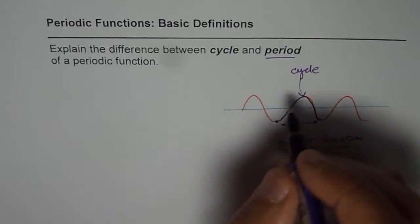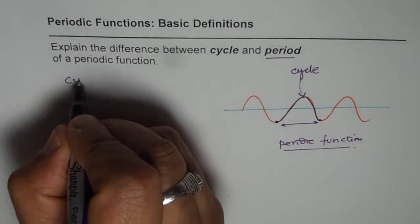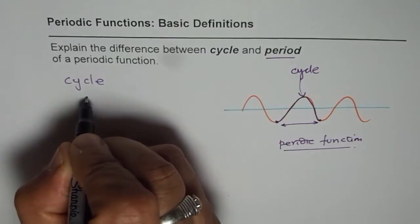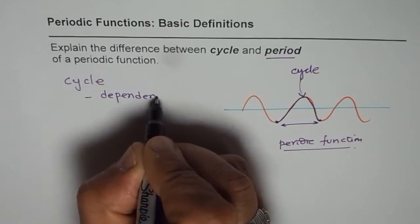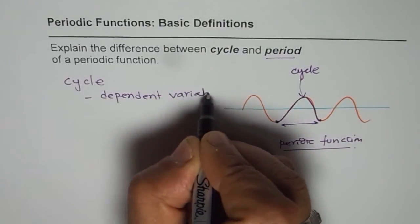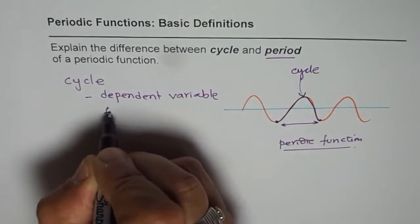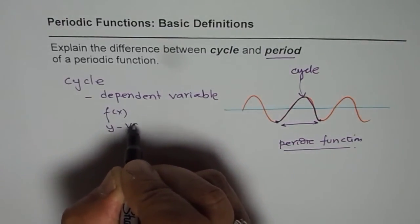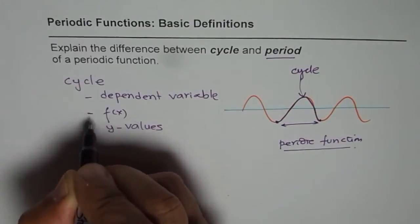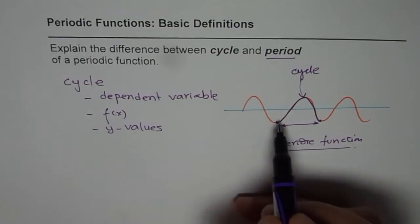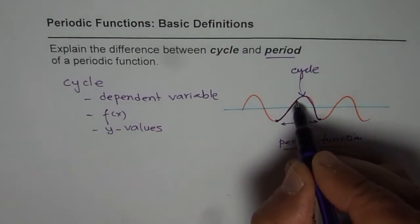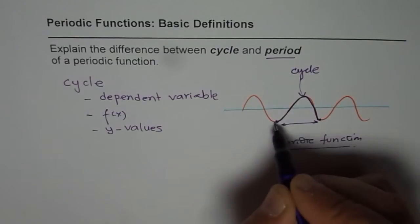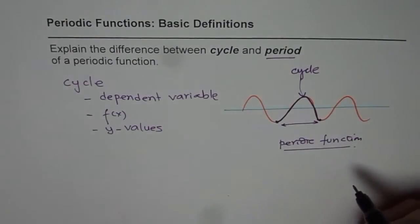So cycle is basically when we talk about cycle then what should we look into? When we talk about cycle we are looking into dependent variable, cycle, f of x, the y values. You understand? When we talk about cycle then we are actually talking about the y values of the function, the dependent variable, cycle. And the complete pattern which is being repeated that set of values is called one cycle. So it is normally the dependent variables which constitute the cycle.